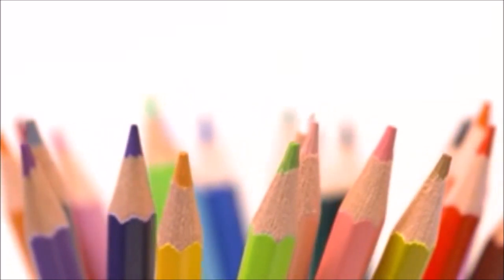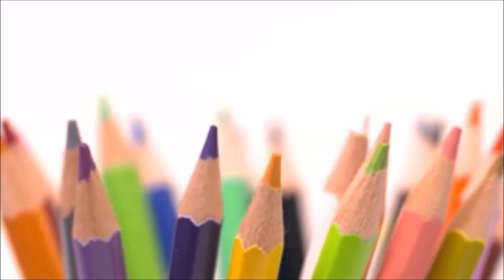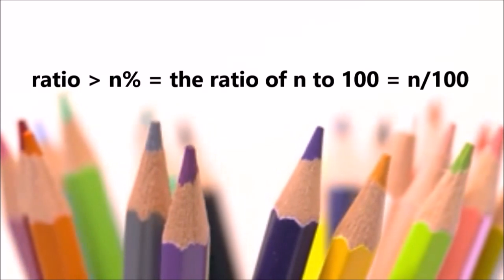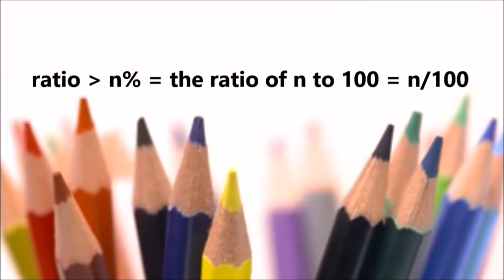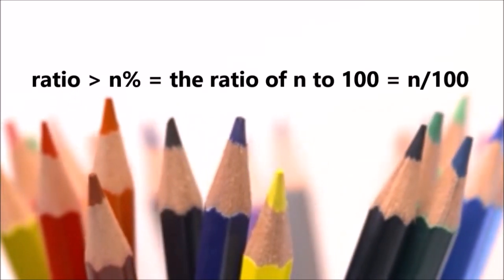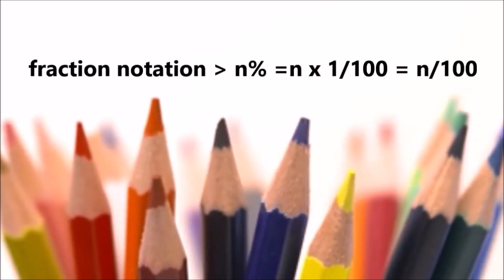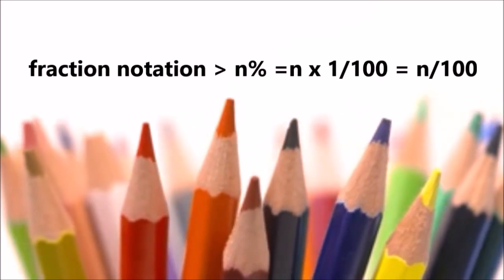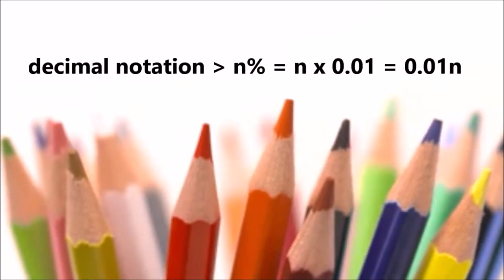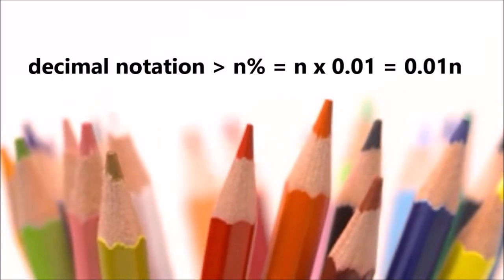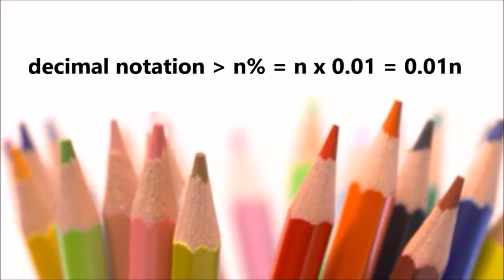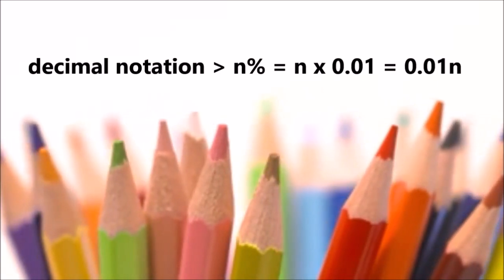The definition leads us to the different ways of expressing percent. The notation n percent can be expressed using ratio notation: n percent equals the ratio of n to 100. In fraction notation, n percent equals n over 100. In decimal notation, n percent equals n times 0.01, which equals 1 over 100.